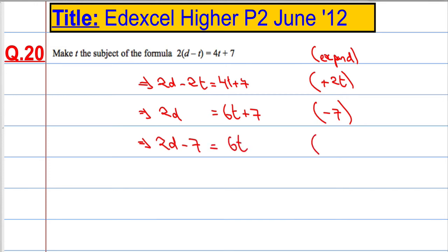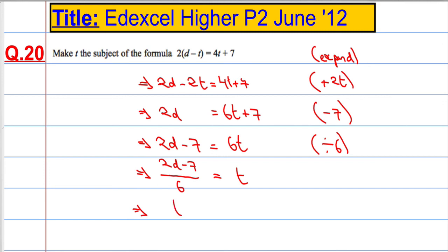And then lastly, we're going to divide both sides by 6. So we get 2d minus 7 divided by 6 equals t, which means that t equals 2d minus 7 over 6.